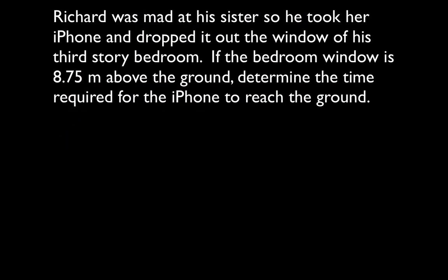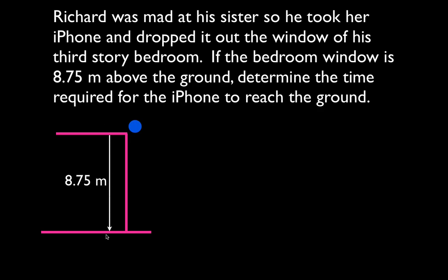Okay, Richard is mad at his sister, so he takes her iPhone and drops it out the window. The bedroom window is 8.75 meters above the ground. We want to know the time it takes for the iPhone to reach the ground. For free fall problems, the first thing I do is draw a picture — a simple sketch. I draw where it's being dropped from, the ground surface, and the object. I mark down that the distance is 8.75 meters. Now, where the thing starts we designate as zero, so it falls downward, meaning the change in position is negative 8.75 meters.